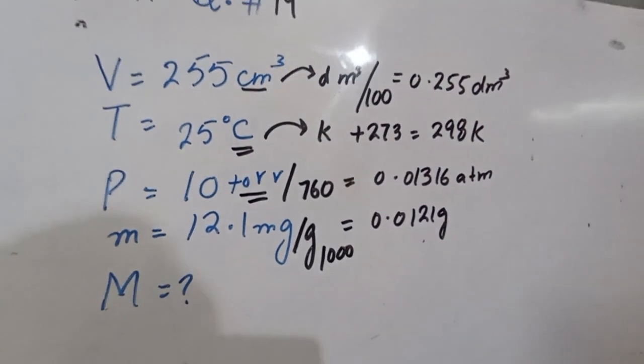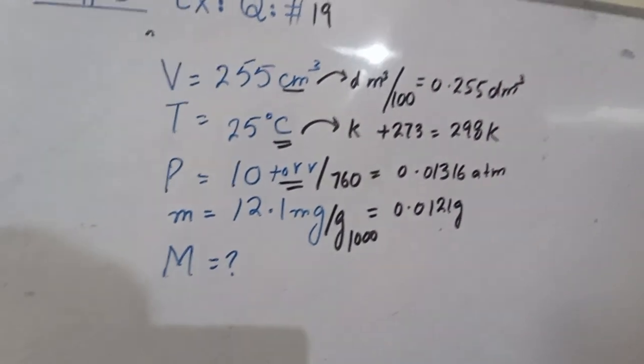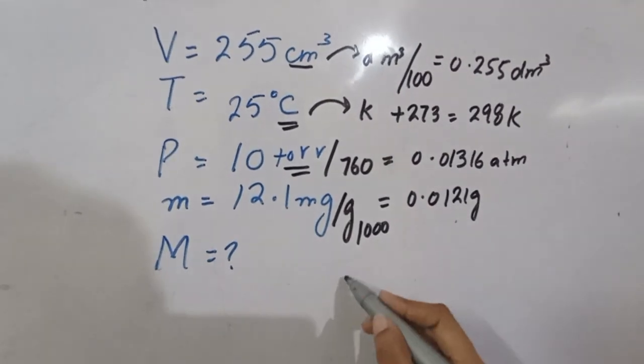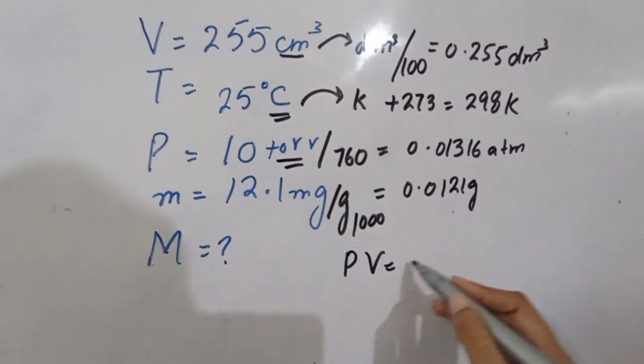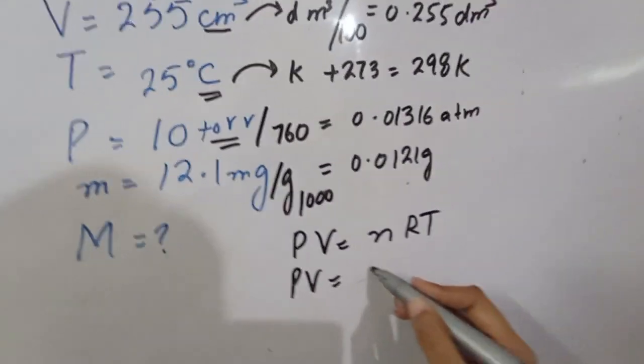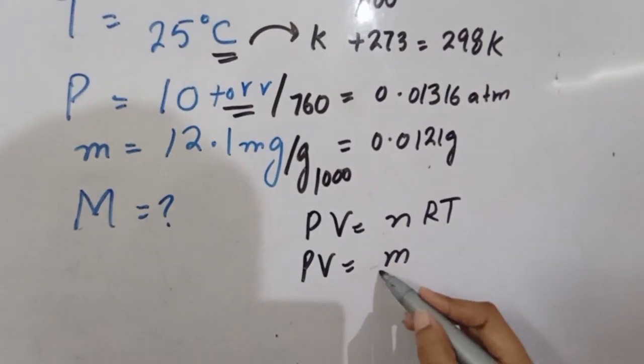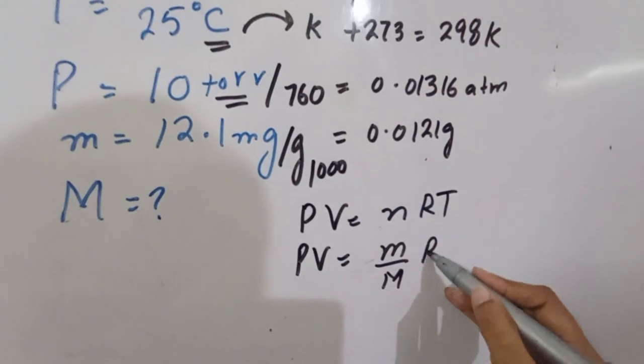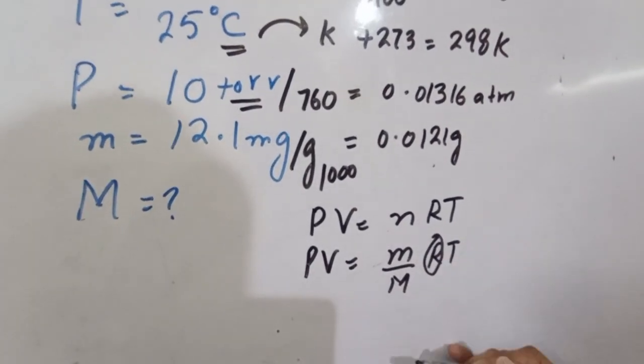We need to find molar mass. As you know, PV equals nRT. We can write PV equals m over M times RT, where m is mass and M is molar mass.